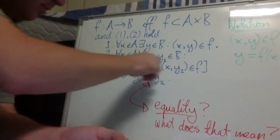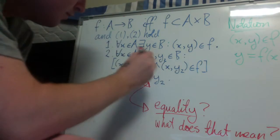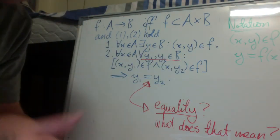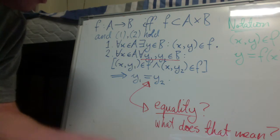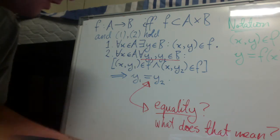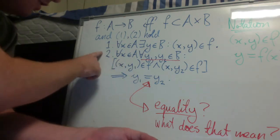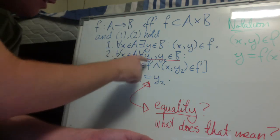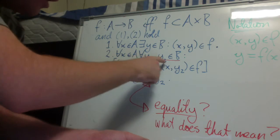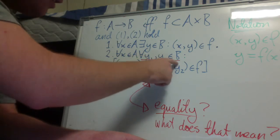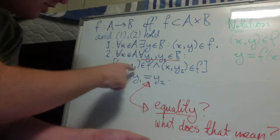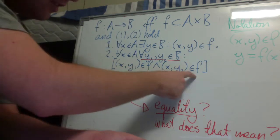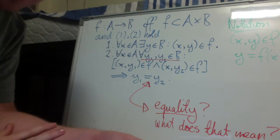So this bit here is what I omitted accidentally from the video on the set theoretic definition of a function. So again condition 2 states that for all X in the domain, for all Y1, Y2 in the codomain, if X, Y1 is an element of F and X, Y2 is an element of F, then Y1 and Y2 are equal.